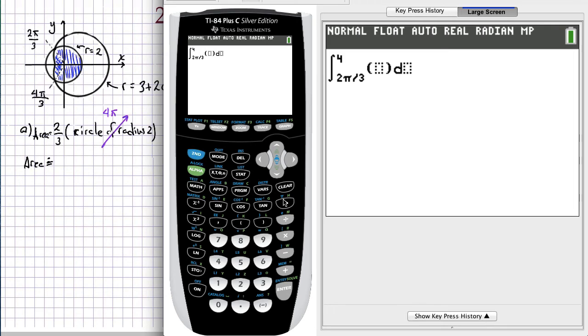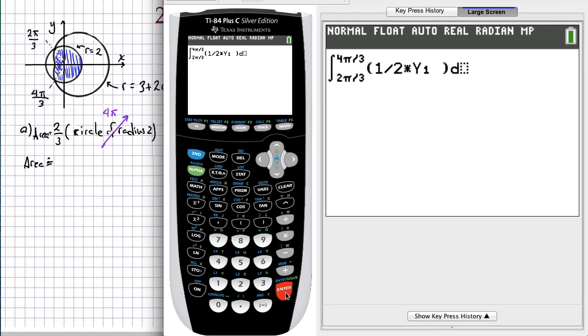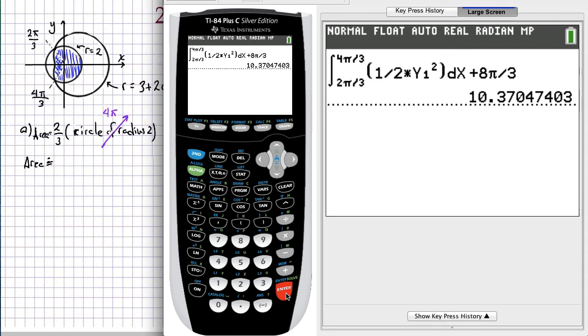We're going to go from 2π/3 to 4π/3, and what is our function? Our function is ½ times y1 squared. The quantity needs to be squared, working with respect to x. To that we're going to add 8π/3.